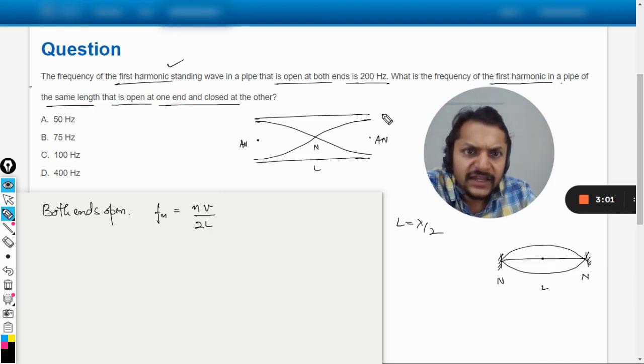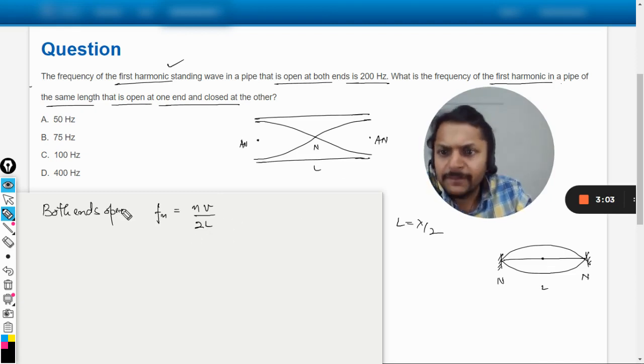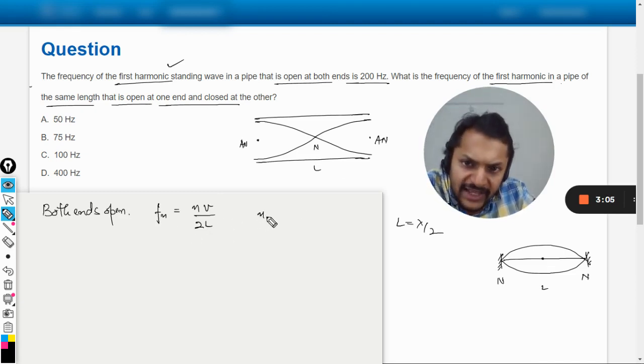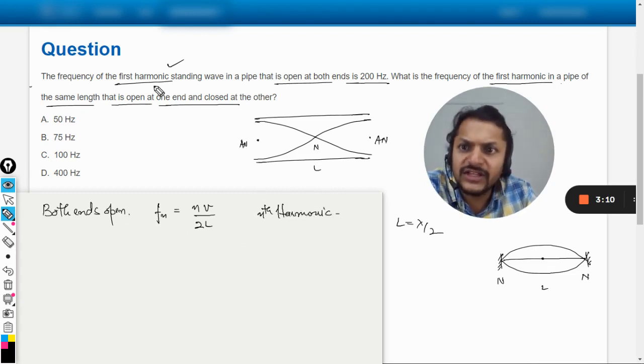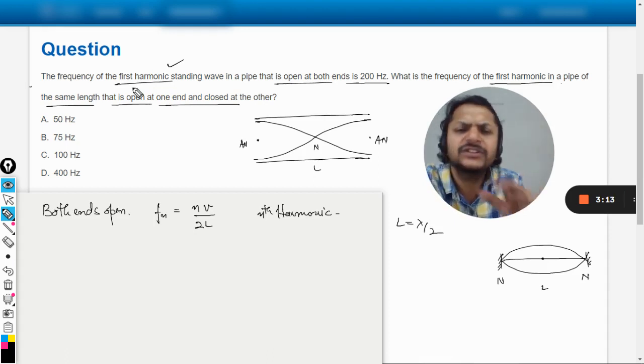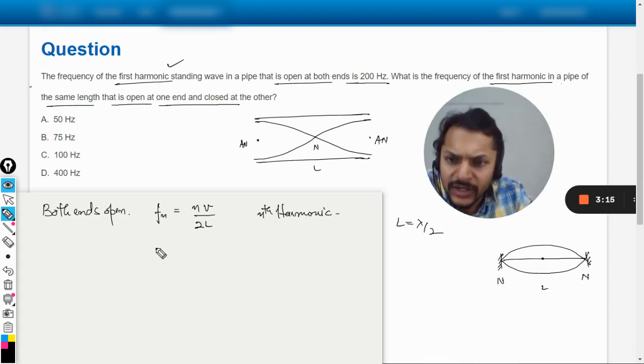And this here is for the nth harmonic. And it is given in the question that we are concerned with the first harmonic, so we just substitute the value as n is equal to 1. Now the first harmonic will be V divided by 2L, and this harmonic is given as 200 hertz.